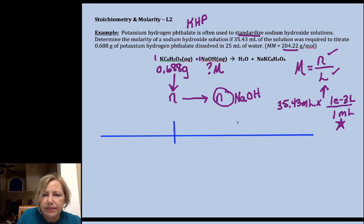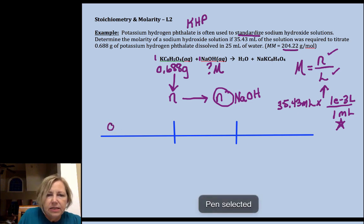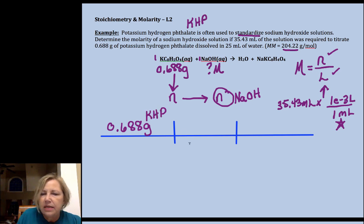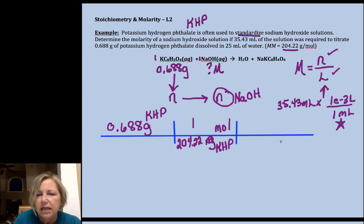So let's jump into our little mole road. This time we only have two steps, so it's not too bad in that sense. We have 0.688 grams of my KHP—that's just an acronym, not a chemical formula. I want to get rid of grams of KHP and I want moles. The molar mass is given. Often it's given once you've done it a few times, because we're really interested in higher knowledge at that point.